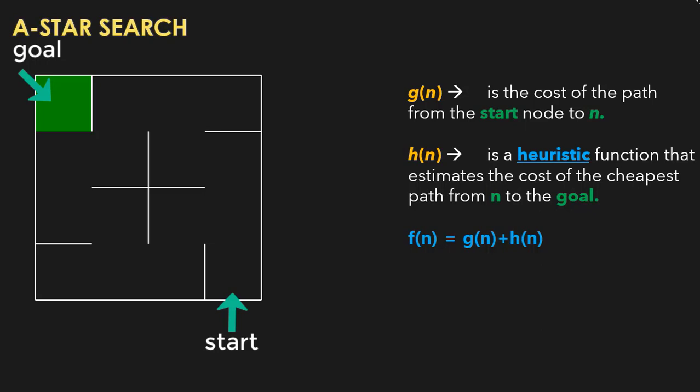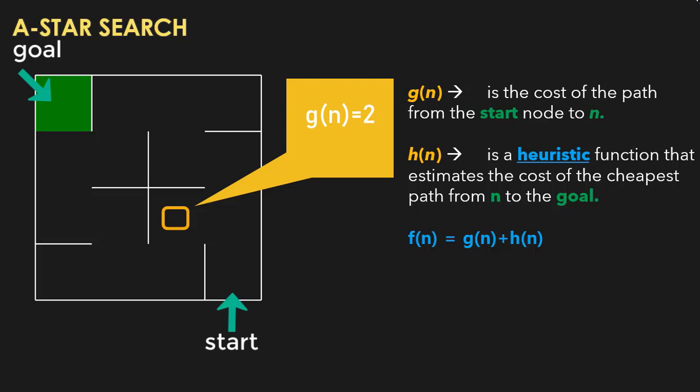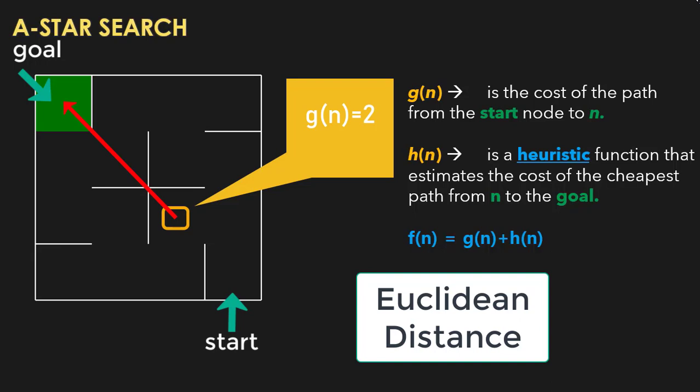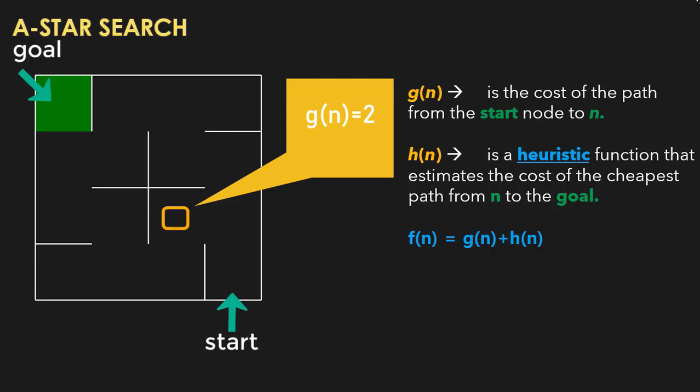Let me explain that with an example. Consider this cell. The cost to reach it from the start cell is 2, because from the start cell we can reach here in two steps — that is G of n. Then H of n is the estimate of the cost to reach the goal. Of course we do not know the actual path to the goal, but we simply estimate it. That estimate can be the Euclidean distance between this cell and the goal cell. Of course we cannot move diagonally, but this distance is just an estimate.